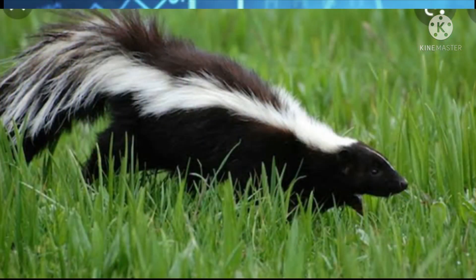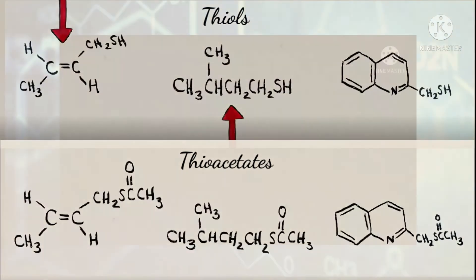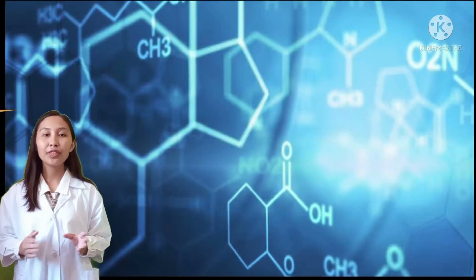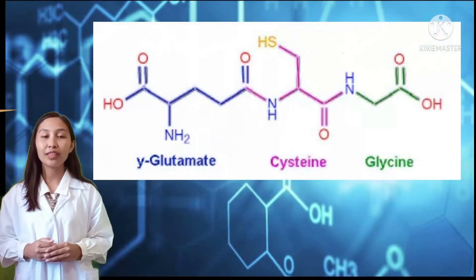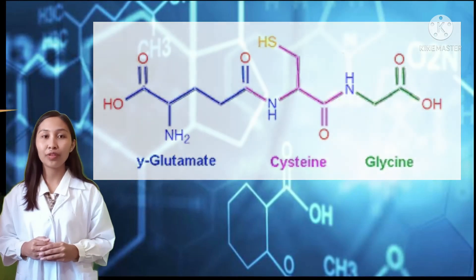Thiols are also the reason why skunks smell so bad. The most common characteristic of the skunk is its defensive spray, which contains 2-butene-1-thiol and 3-methyl-1-butanethiol, as well as thiol-acetic acid derivatives. A number of thiols are also found in nature, such as cysteine and glutathione.